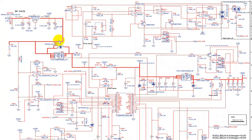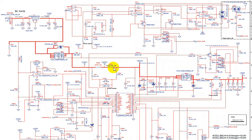The 19V then goes to this MOSFET, which acts as a switch. We call it a switch because we have 19V at the drain and 19V at the source. The four pins connected together are the drain, and the three pins here are the source. There is also a diode here used for protection. The 19V passes through this MOSFET after receiving the control signal at its gate, then passes through these current sense resistors.